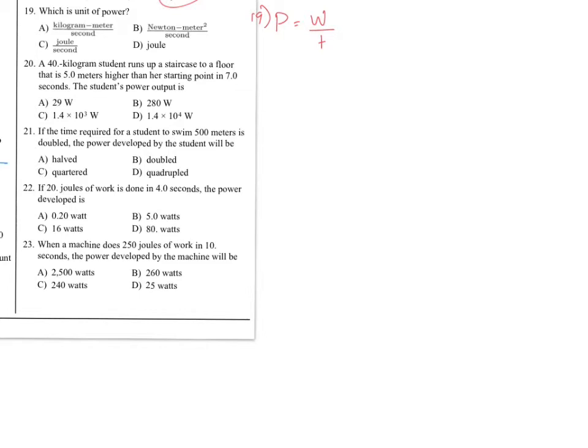So what's the rate of how much work is done per second. So the unit for power, if we look at here, work is done in joules and time in seconds. So joules per second. Choice C.